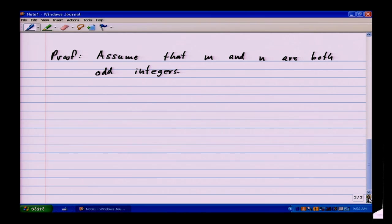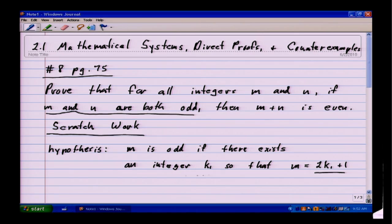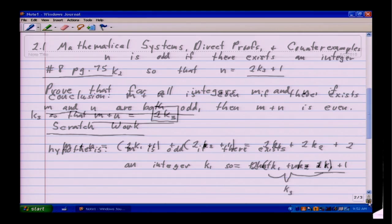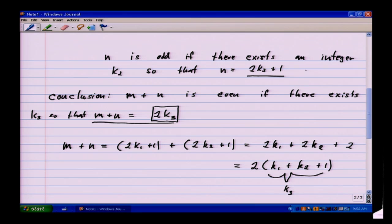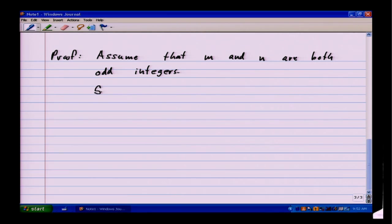From that, I can go back and write down what I scratched from my hypothesis, which is that there exists k1 so that m equals 2k1 plus 1, and also there exists k2 so that n equals 2k2 plus 1. So we can say there exists integers k1 and k2 so that m equals 2k1 plus 1 and n equals 2k2 plus 1.